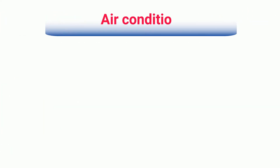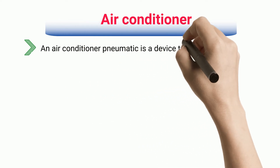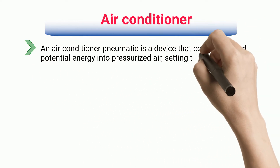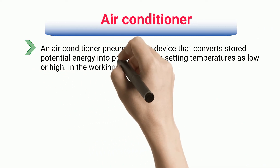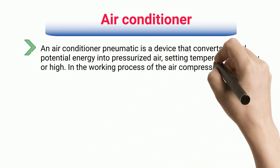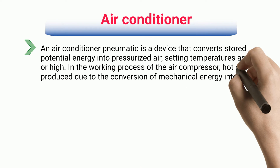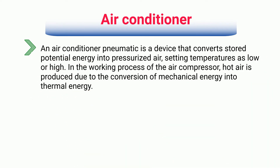Air Conditioner. An air conditioner compressor is a device that converts stored potential energy into pressurized air, setting temperatures as low or high. In the working process of the air compressor, hot air is produced due to the conversion of mechanical energy into thermal energy.